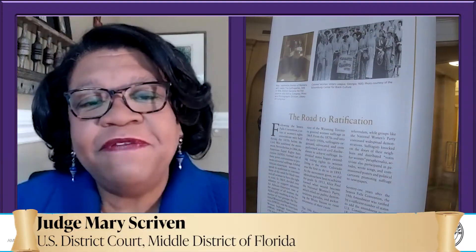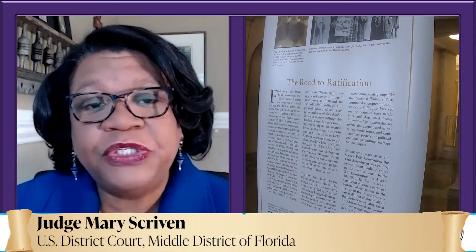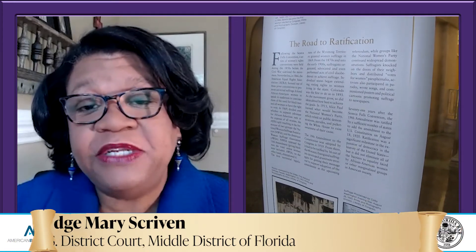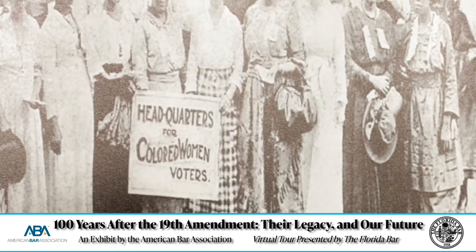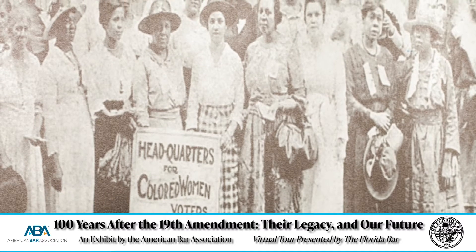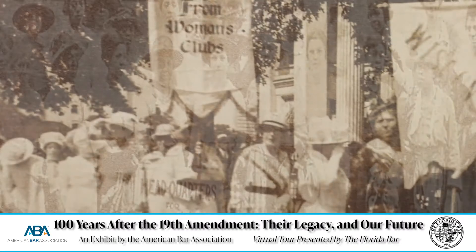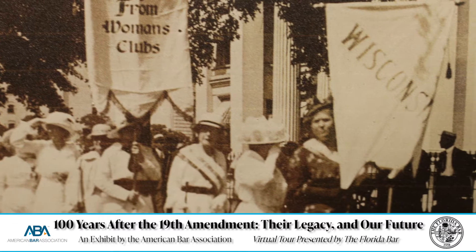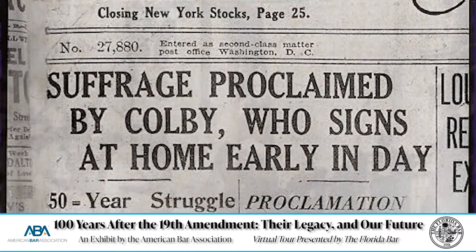After the Seneca Falls Convention, a series of women's rights conventions were held during the 1850s. These conventions eventually led to the formation of the American Equal Rights Association, which included white and black women and men dedicated to the goal of universal suffrage. Throughout the late 1800s and early 1900s, suffragists organized, advocated, and even performed acts of civil disobedience to achieve suffrage.